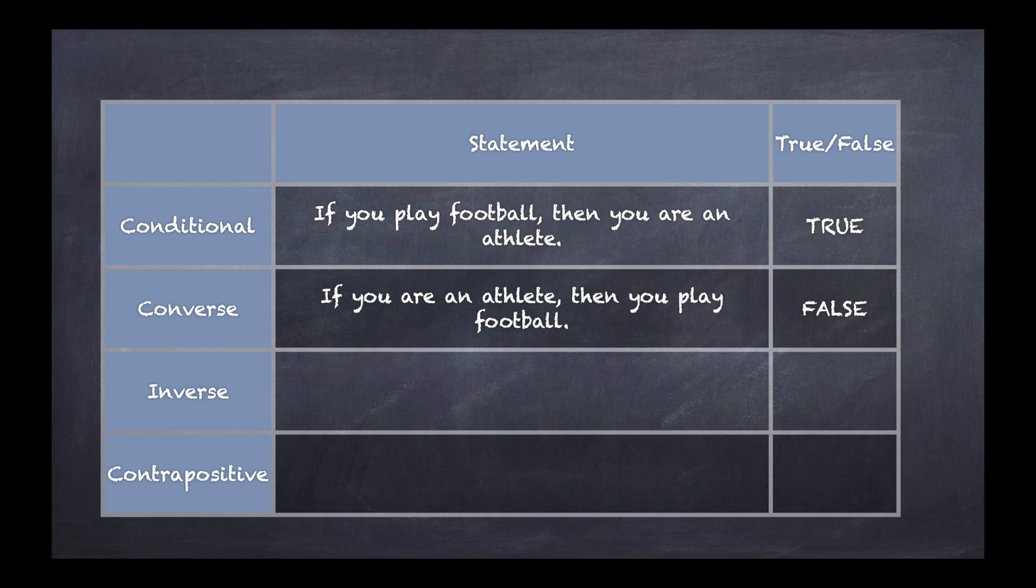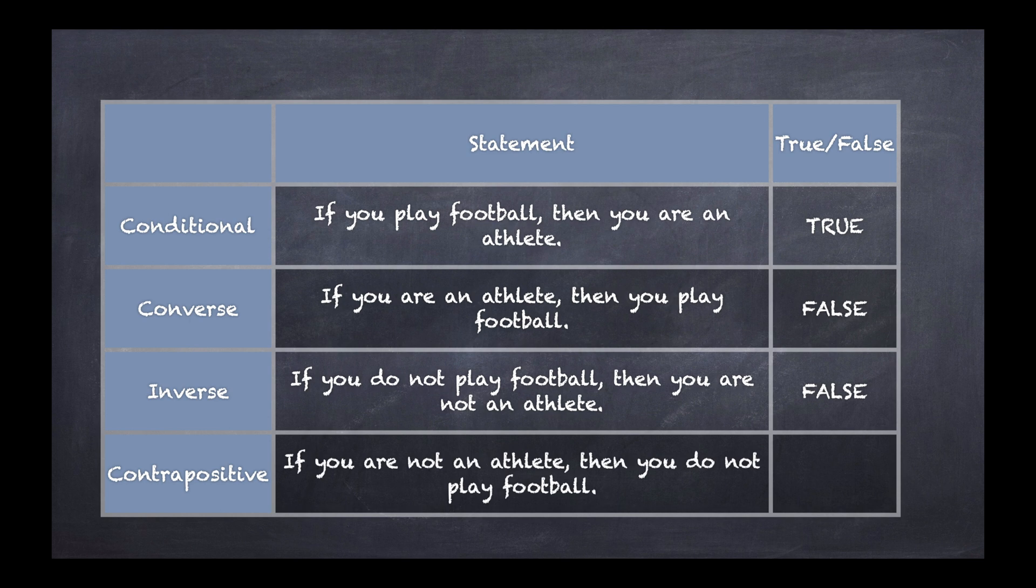Inverse, remember, we take the original statement but we make it negative. If you do not play football, then you are not an athlete. Do you notice that the converse and inverse actually seem to be saying the same basic thing? So this one would be false as well, because you could be playing baseball instead. Now we finally have contrapositive. Remember, we switch the order and we make it negative. So if you are not an athlete, then you do not play football. That, because if you're not an athlete, you're not going to be a football player, because we've already established if you do play football you are an athlete. So this has to be true. So notice, the conditional and the contrapositive have truth values that are the same, and the converse and the inverse have truth values that are the same.